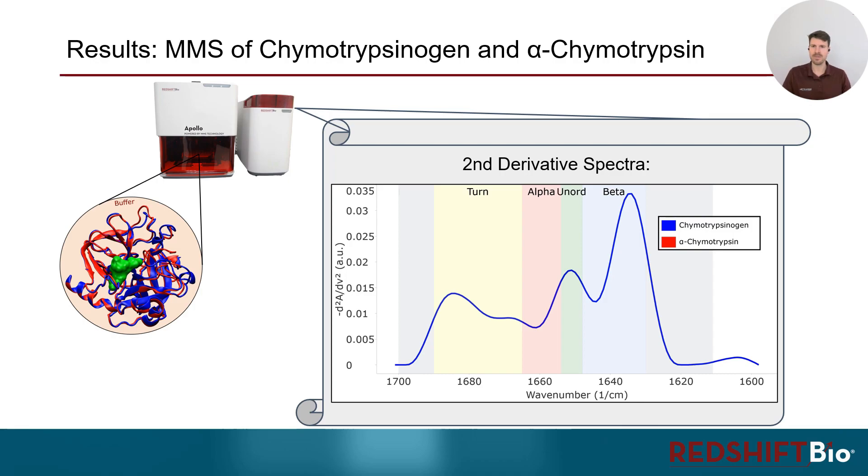Roughly speaking, there are three main features in the spectrum of the inactive version, showing up in the beta sheet, the unordered and the turn region.